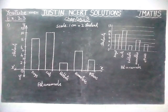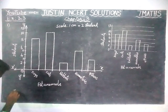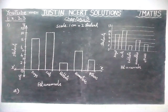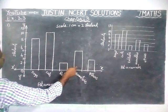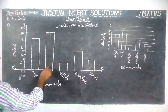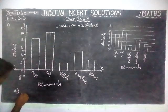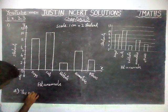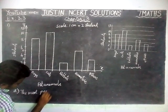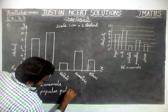Now we are going to give answers for the questions. Question A: which is the most popular pet? By using the bar graph, you can check — the tallest bar is for cat. So the most popular pet is cat.